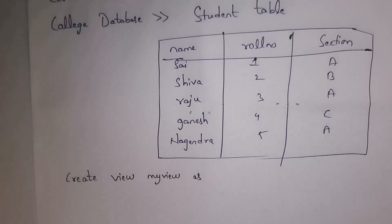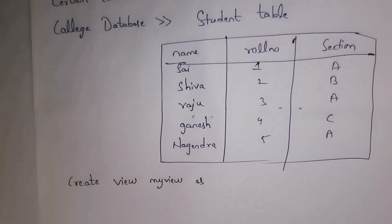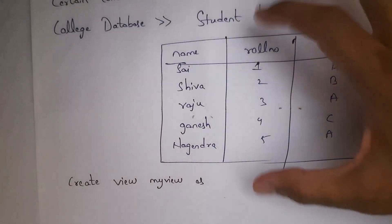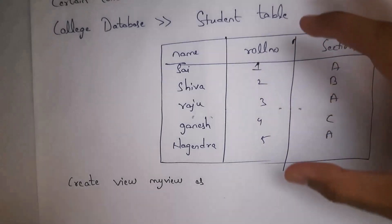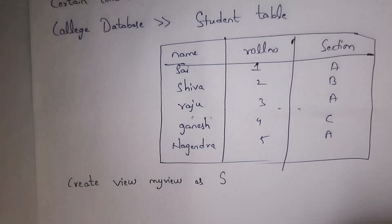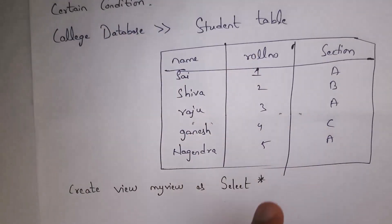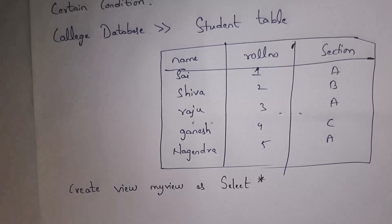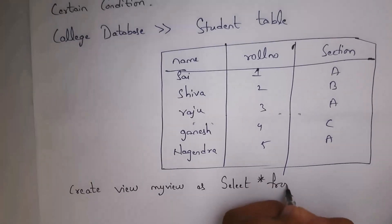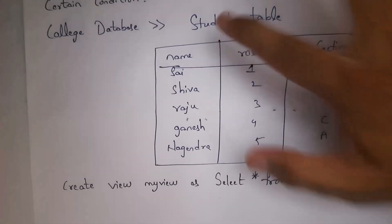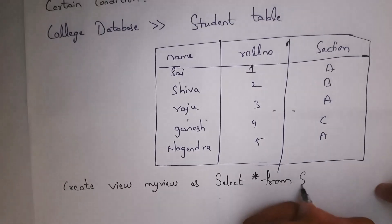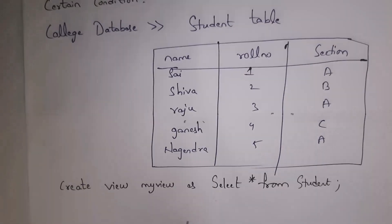Now using the SELECT command you need to select data from the student table and place it in the view. Write: SELECT * — star means all three columns — FROM student, and end with a semicolon. Whenever you write this line of code and click enter, it will create the view named 'my_view'.